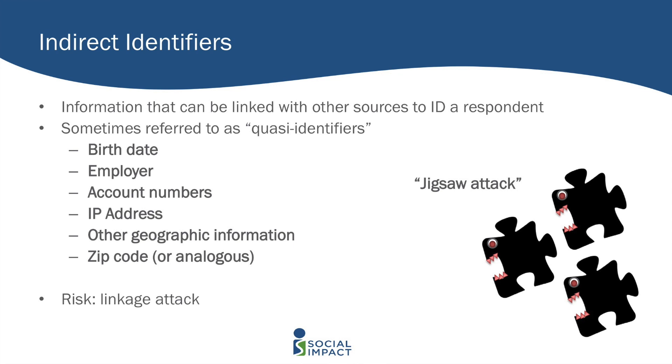Indirect identifiers — sometimes called quasi-identifiers — are information that can be linked with other sources to identify a respondent. These are similar to what was used to identify the governor of Massachusetts: things like birth date, employer, account numbers, and other geographic information such as nearest health center or distance from a specific institution or school. On its own, it may not identify someone, but combined with other sources or with other variables in your own data set, it may serve to identify somebody.